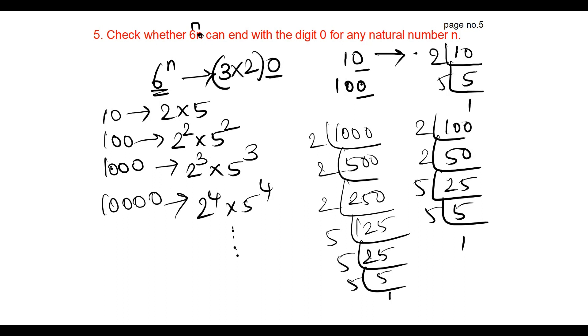This given number 6^n can be written as (2 × 3)^n, or 2^n × 3^n. Here the prime number 5 is missing.